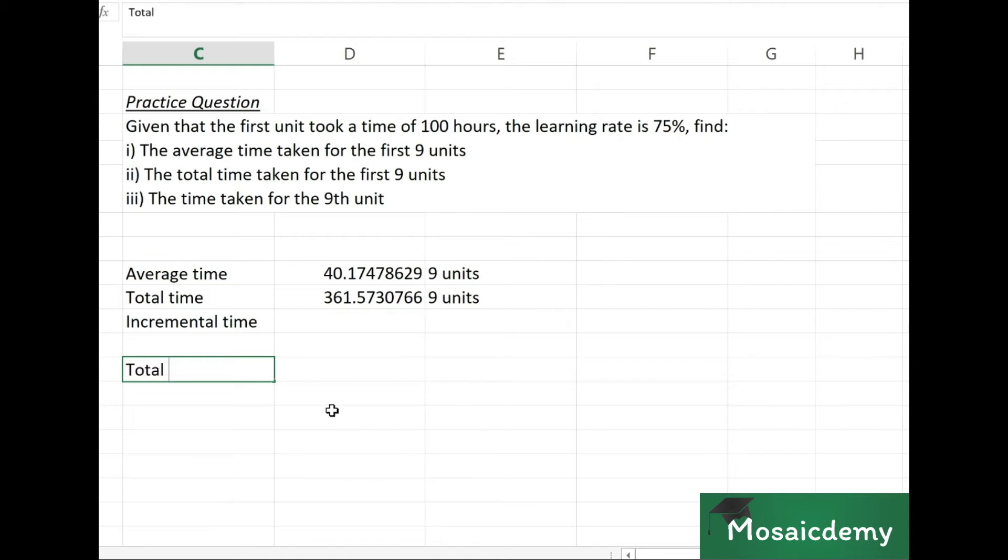We can calculate the total time for 8 units by putting the formula straight off. It will be the number of units (8) into the formula y = ax^b. A is 100.